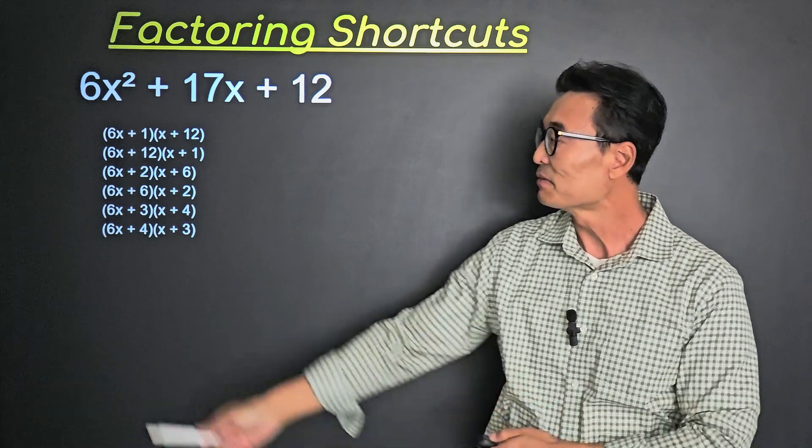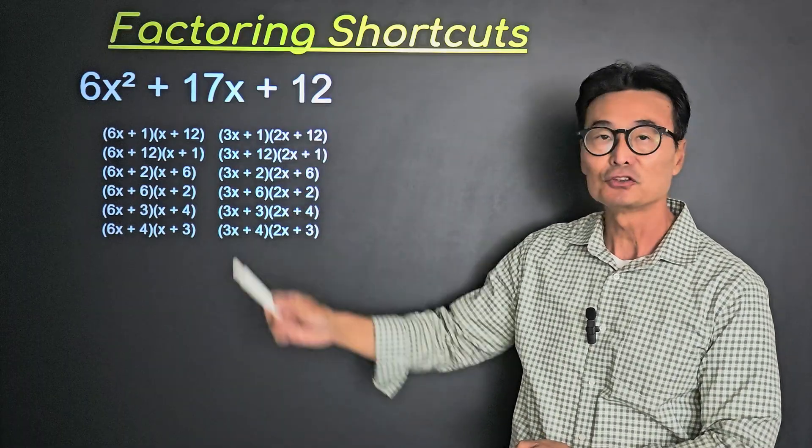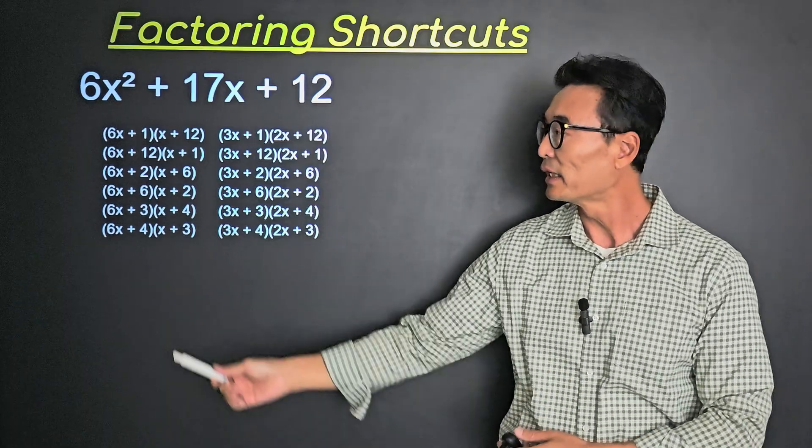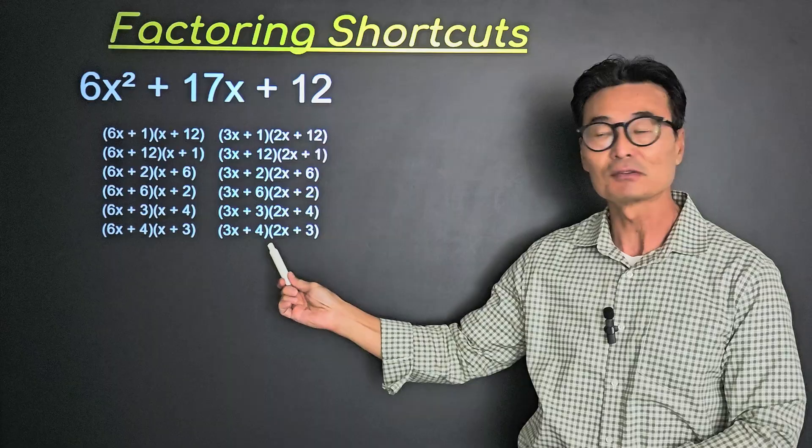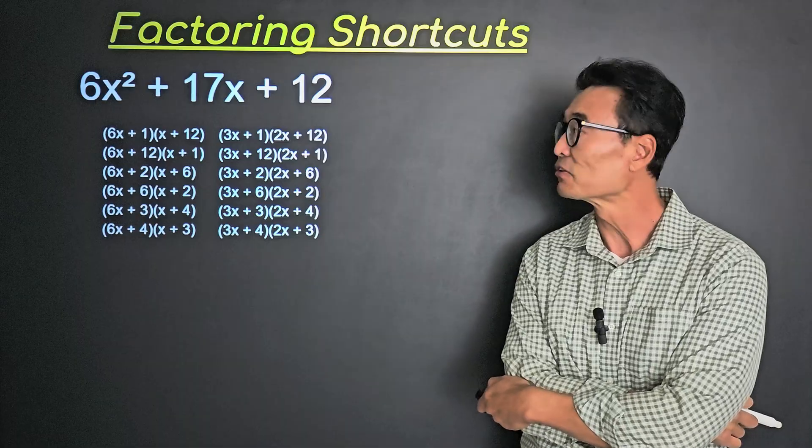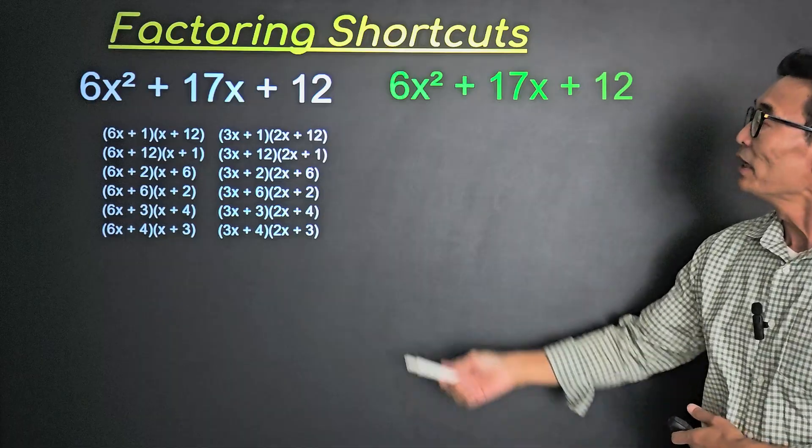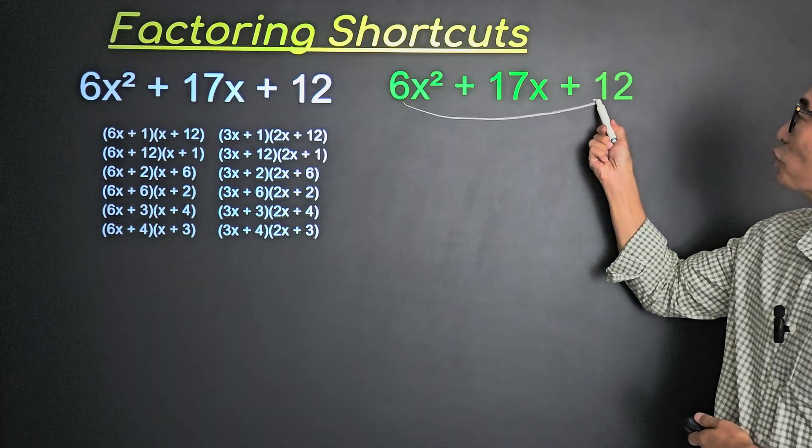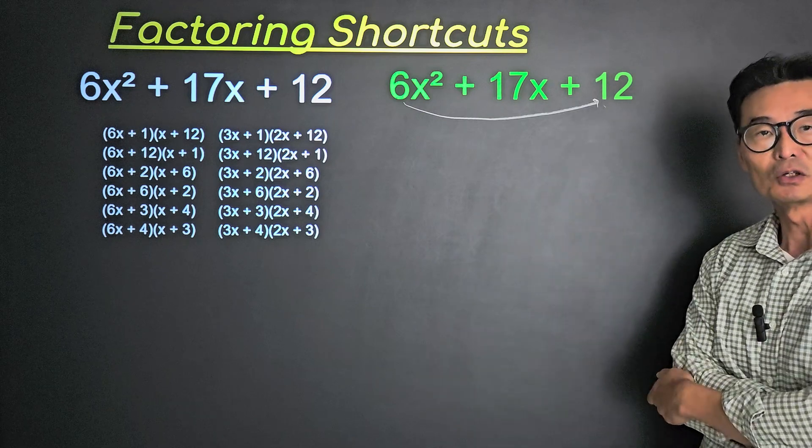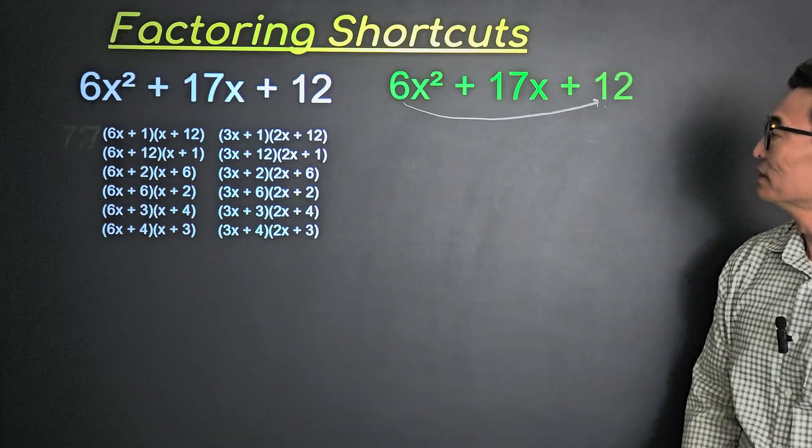And with the 12 in the back, notice we have 12 and 1, 6, 2, 3, and 4. And another way is that instead of having the 6 and 1, it could also be 3 and 2 while keeping the 12, 1, 6, 2, 4, and 3. So you could try and multiply all 6 or 12 of these to find the one that gives you 6x² + 17x + 12 or use this method. Take the 6 multiplied to the 12, meaning take the coefficient of x squared multiplied to the c value, where 6 times 12 is 72.